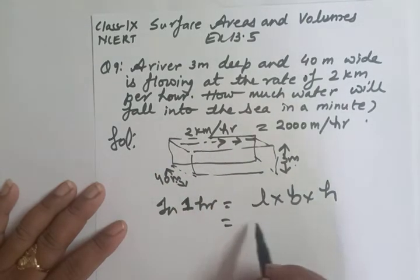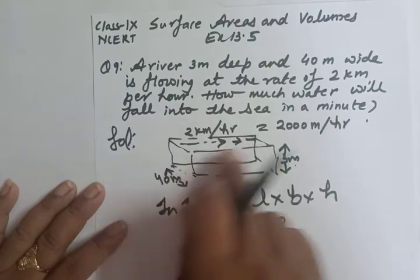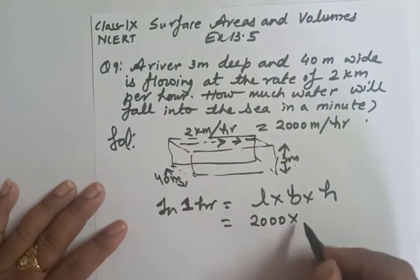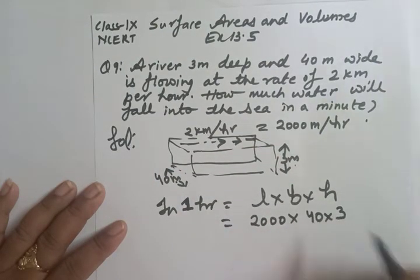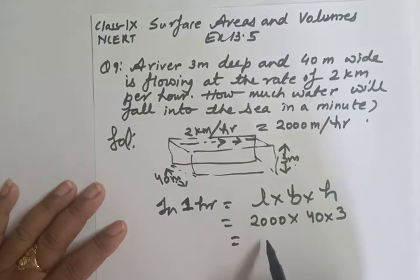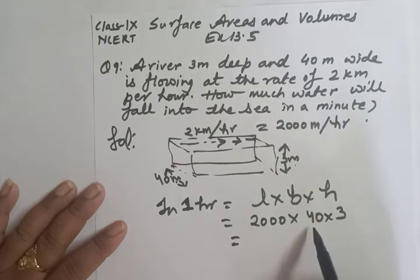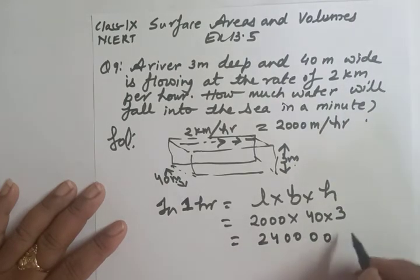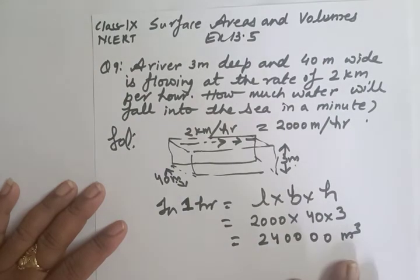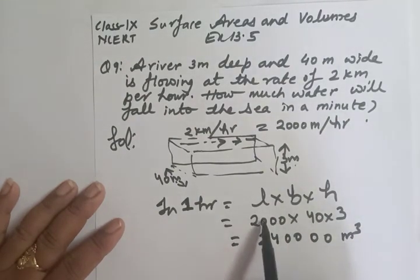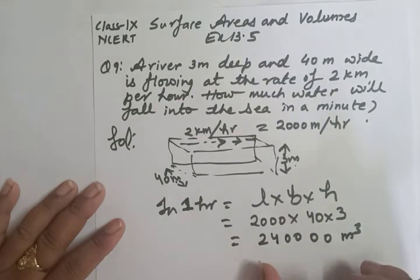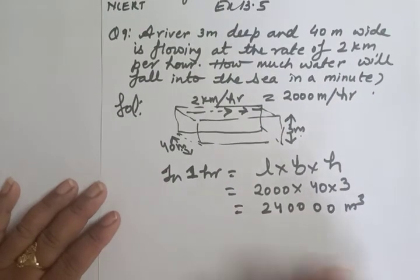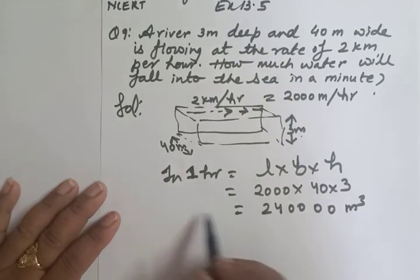The length in 1 hour is 2000 meters, the breadth is 40 meters, and the height is 3 meters. Volume = 2000 × 40 × 3 = 240,000 cubic meters. So 240,000 cubic meters of water flows in 1 hour.